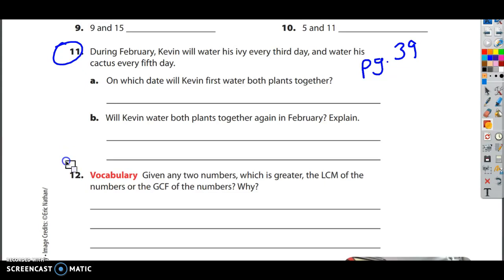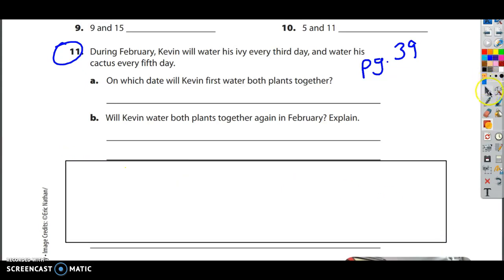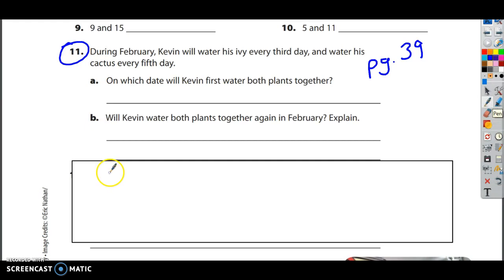On which date will Kevin first water both plants together? Well, what we're going to do here is, since it says on which date will he first water, we're looking for the least number in which those multiples are the same. So we're going to do the multiples of 3, because that's when he waters his ivy, multiples of 5.